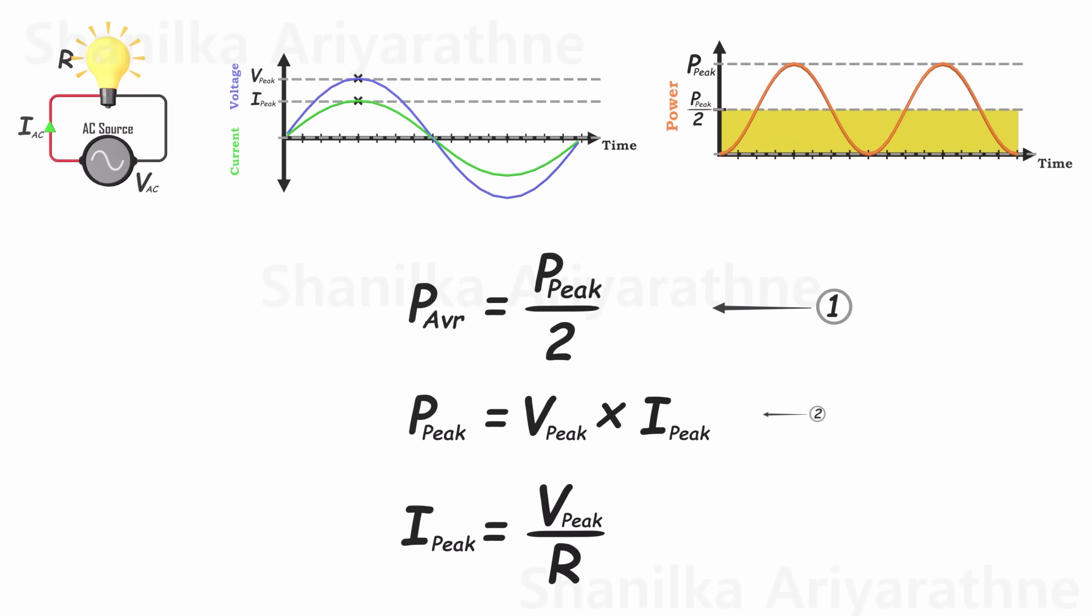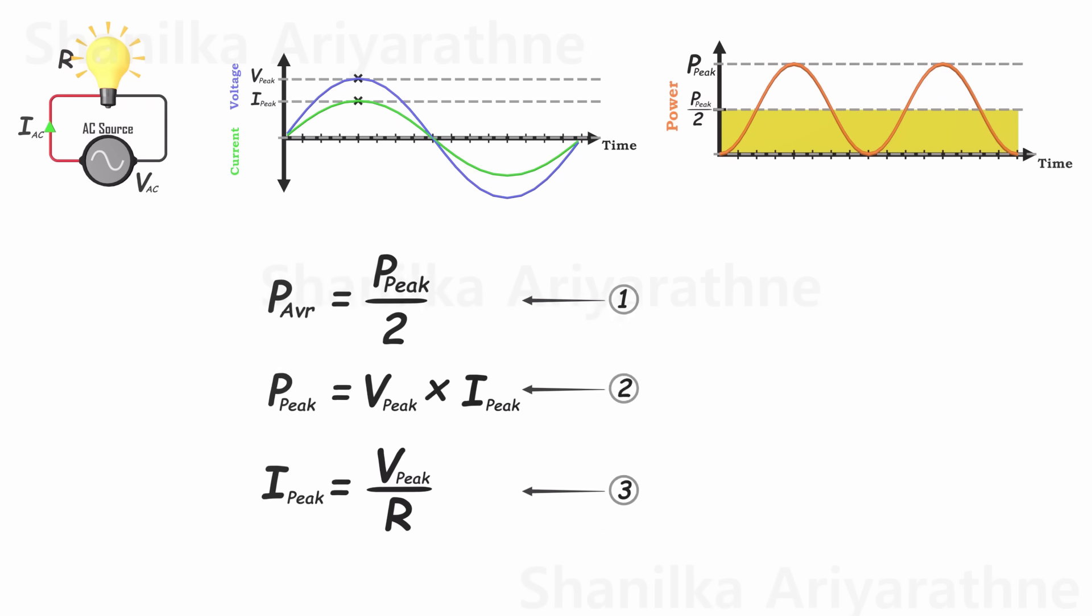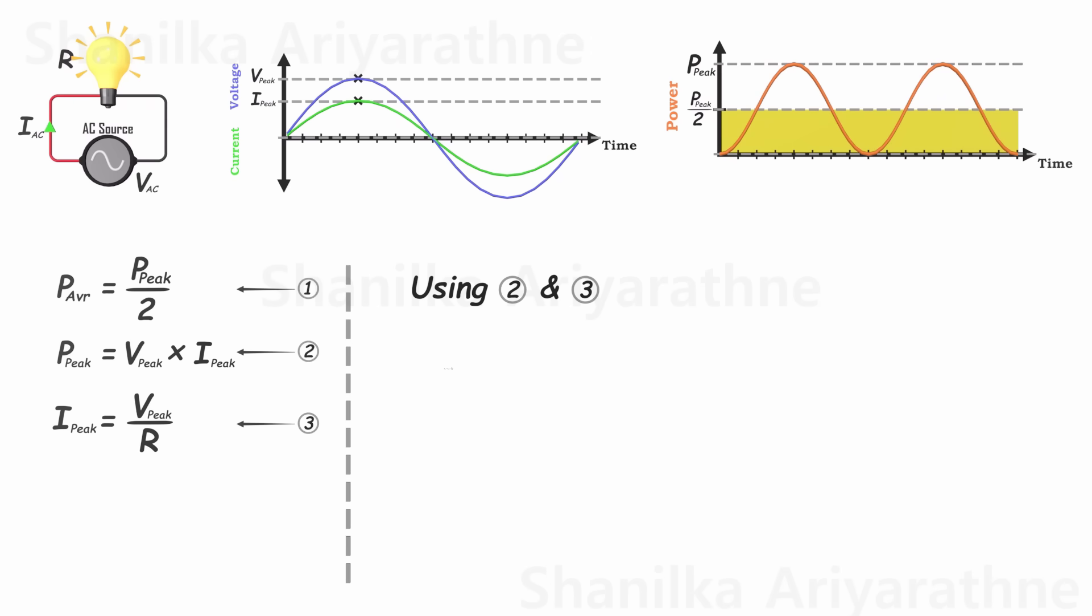Now, armed with three equations, let's endeavor to simplify them. Firstly, employing equations 2 and 3, we can articulate the peak power in terms of peak voltage and resistance. This represents our fourth equation.